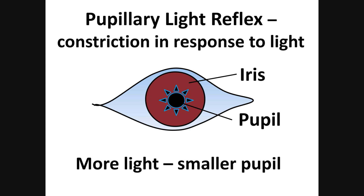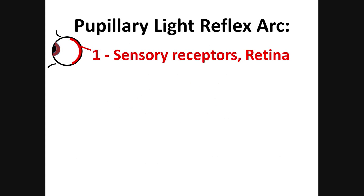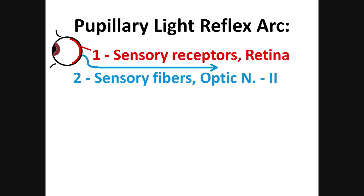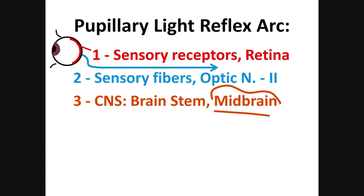The first part is the sensory receptors, located in the retina of the eye, shown in red. The second part is the sensory fibers, shown in blue. The cranial nerve that carries sensory fibers from the eye is the optic nerve, cranial nerve number two.